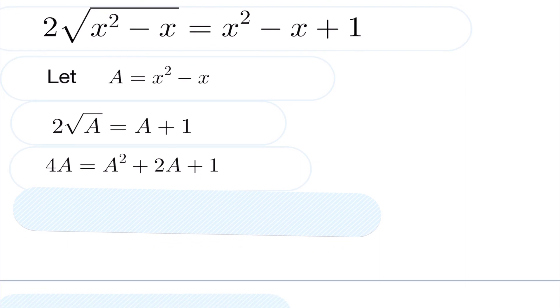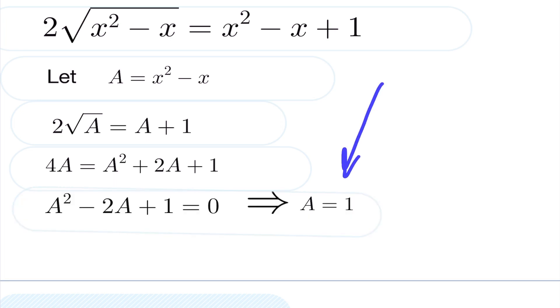Squaring both sides again, we end up getting 4a is a squared plus 2a plus 1. Bringing everything to one side and factoring, I end up getting the a value is 1.